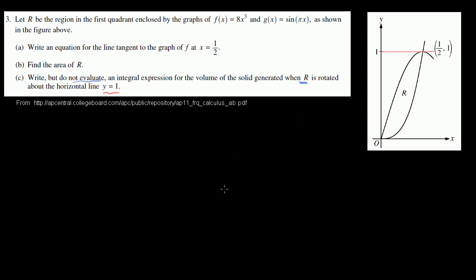The way I'd like to think about it: let's think about what the volume would be if I were to just take the bottom function f(x) and rotate that around y equals 1. Then I'm going to subtract from that the volume if I were to take the top function g(x) and rotate it around.